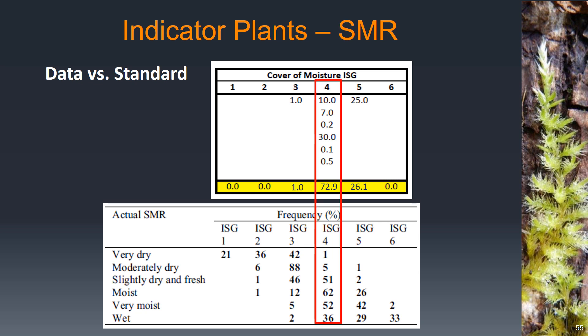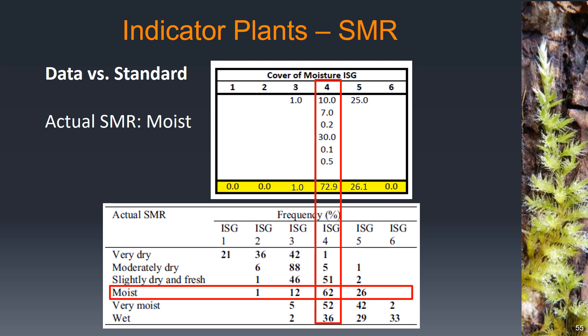Once we've totaled this up, we compare it to a standard table of actual soil moisture regimes based on indicator species group plant frequency from the field guide, and we try to figure out which row most closely matches what we found in the field. In our case, about 73% of our frequency was for group 4. Looking down the table, moist is the one that has the most for group 4, and we're pretty close to that. So it seems pretty clear that moist is where we line up — we have an actual SMR of moist based on the indicator plants.